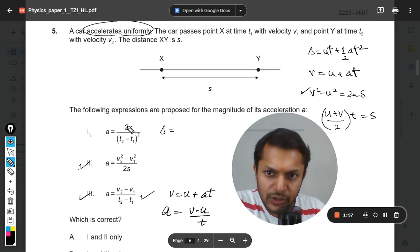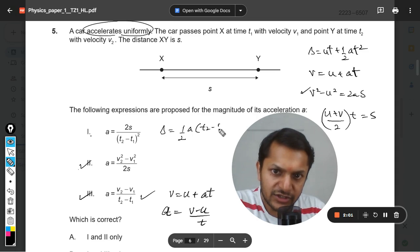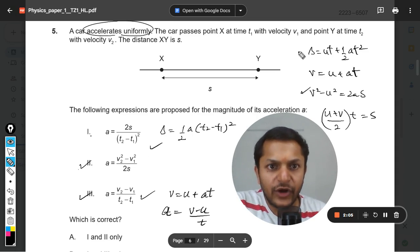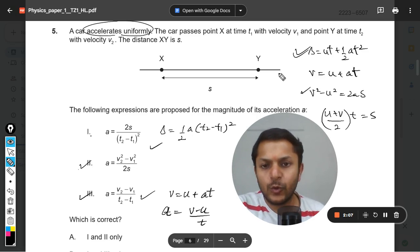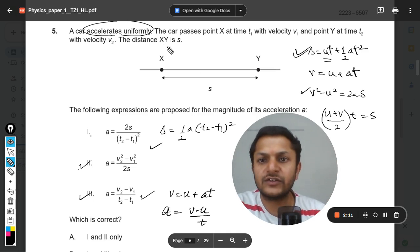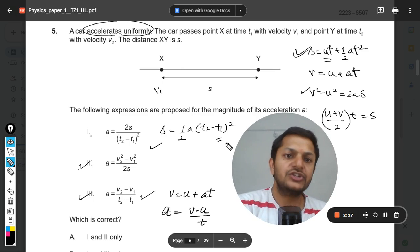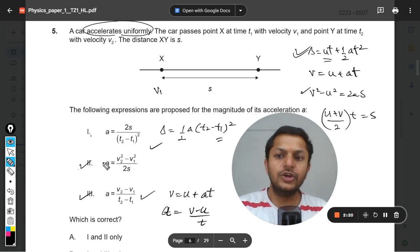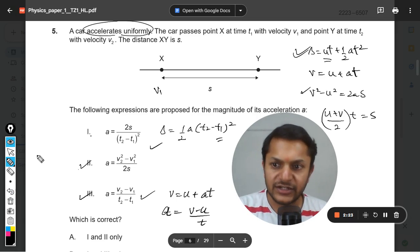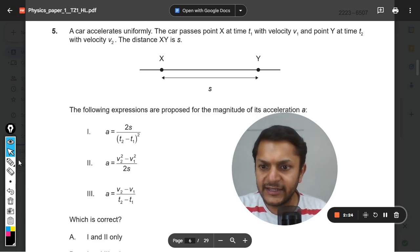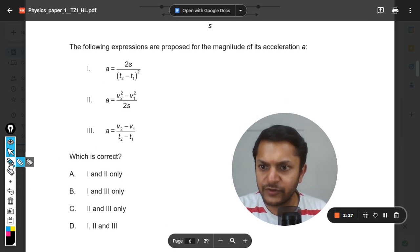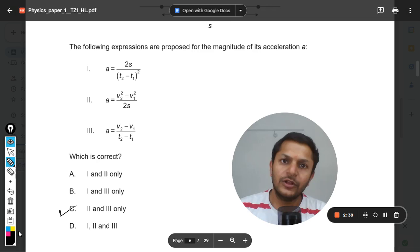1 is like s equals - this 2 will go there - so half a times t2 minus t1 square. Clearly they are trying to use the first SUVAT equation, but in this u is taken to be 0, but clearly u is not 0. It is taken to be v1 if you are taking t1 as the starting point. So definitely equation 1 is wrong. 2 and 3 are absolutely correct. So accordingly our answer will be C.